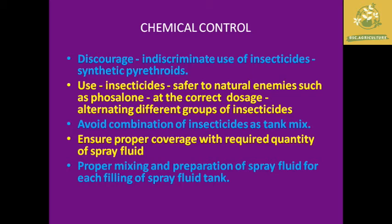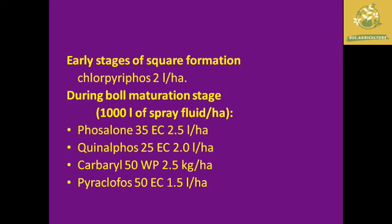For chemical control, avoid excessive use of synthetic pyrethroids. Use insecticides that are safer to natural enemies, alternating between different groups. Avoid tank mixes of combination insecticides. Proper mixing and preparation of spray fluid must be ensured. Chemicals that can be used for boll worm control include Chlorpyrifos, Profenofos, Quinalphos, Carbaryl, and Pyrochlorophos.